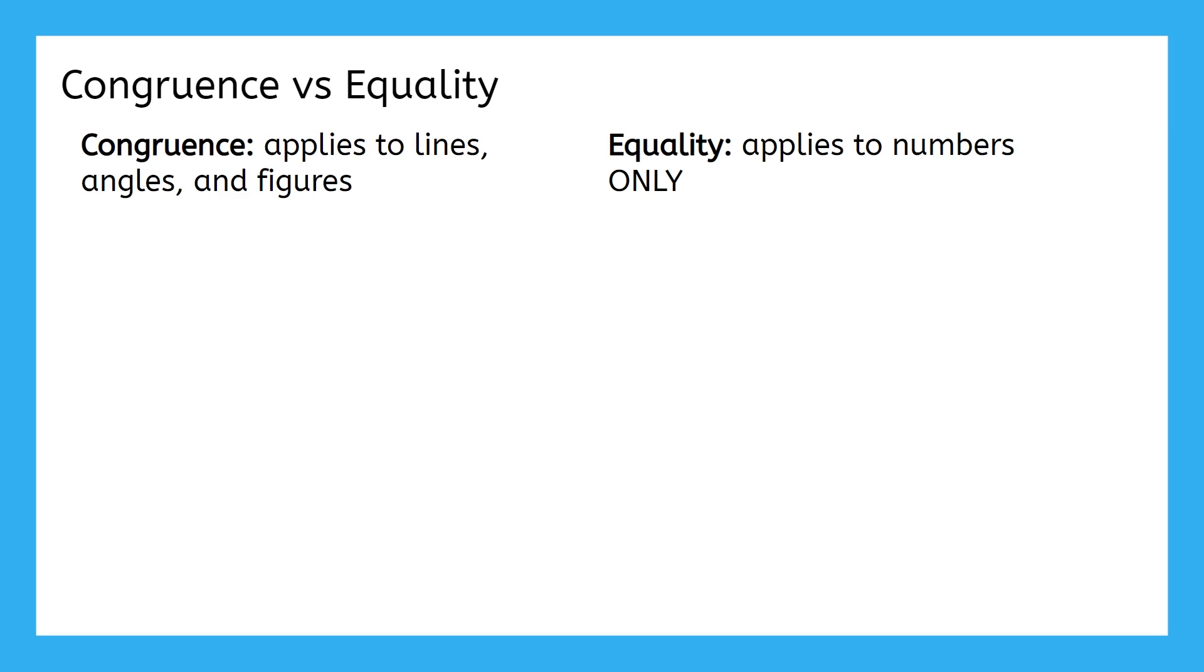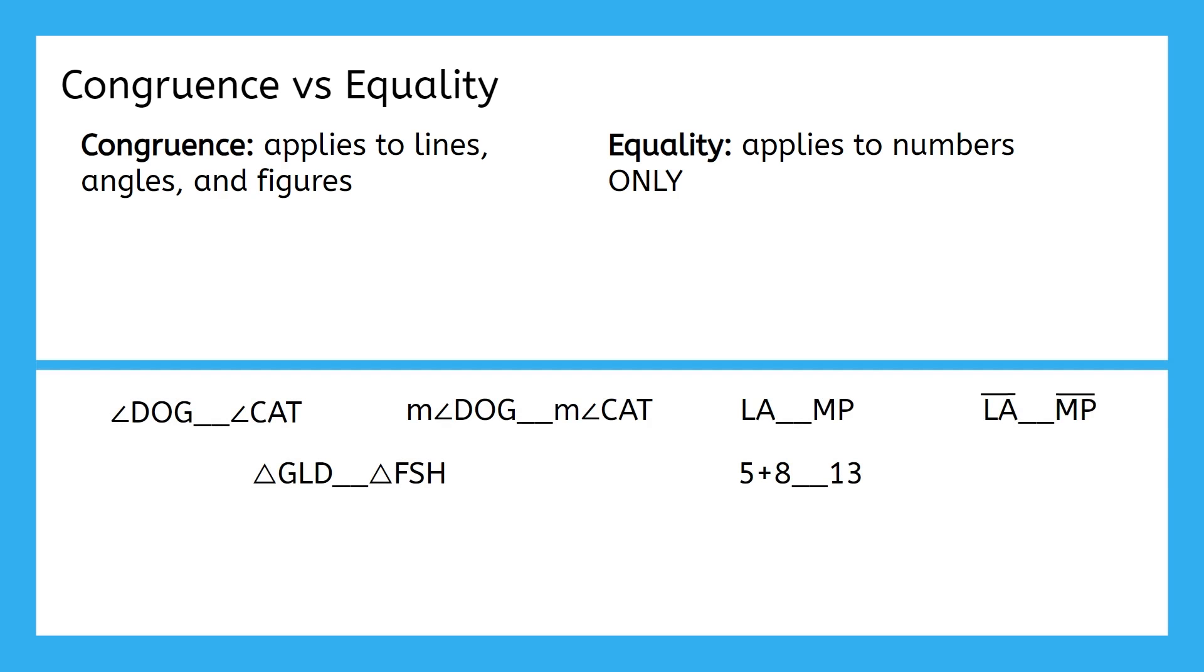Let's practice a little sorting. Here are six statements. Look them over and decide whether the blank should be filled with an equal sign or a congruence sign. I'll give you a hint and tell you that there are going to be three of each in the end. Pause the video here to sort them yourself.